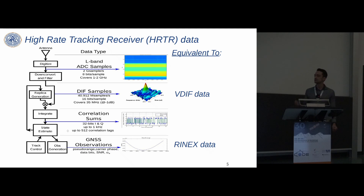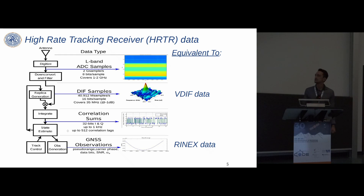Once we get these geodetic observables, we can do a differential positioning solution, effectively estimating the local tie vector.